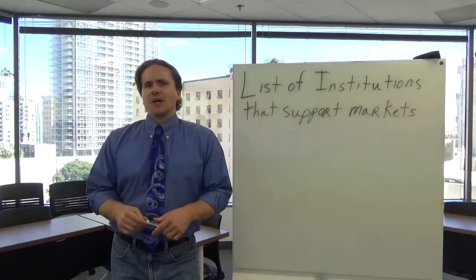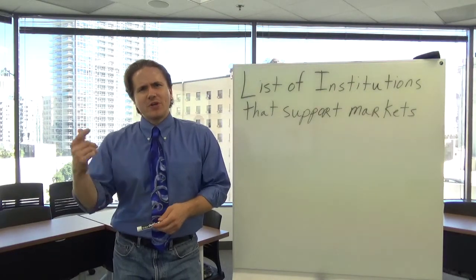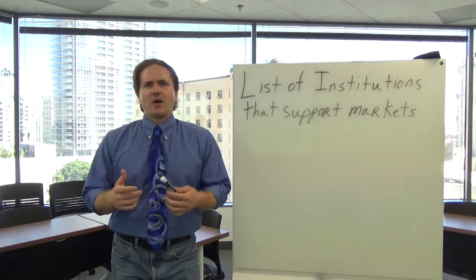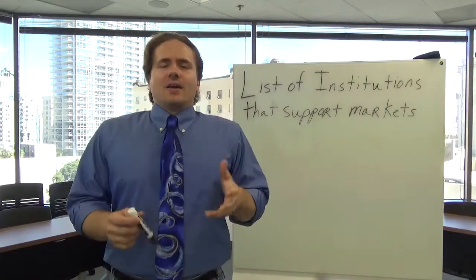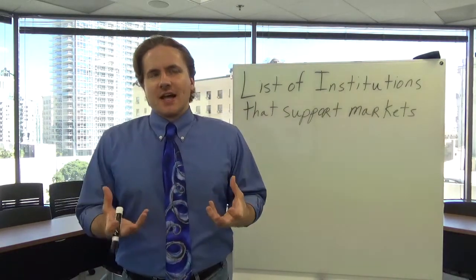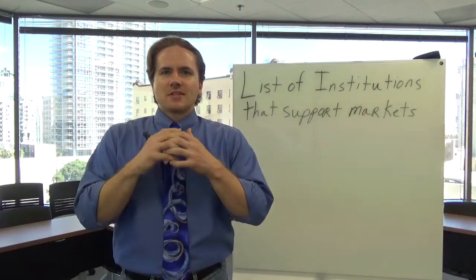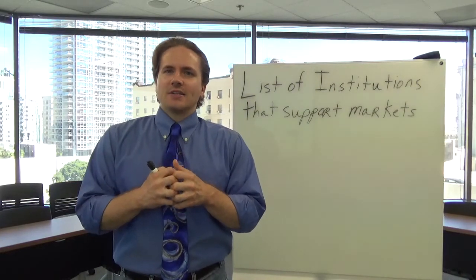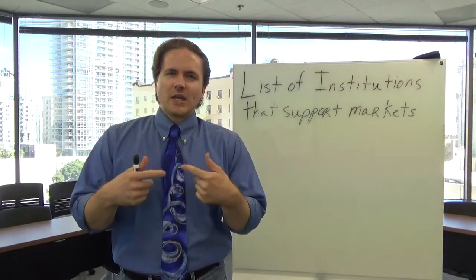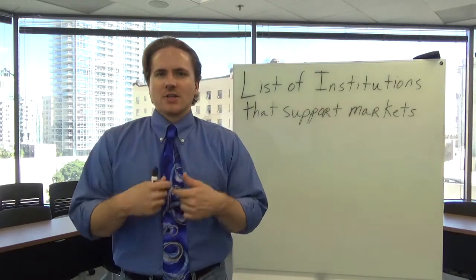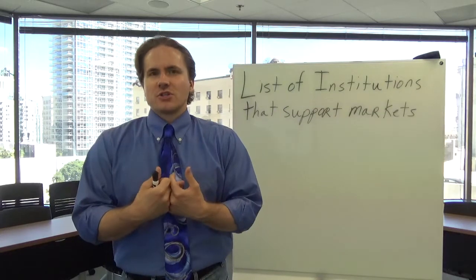In this video we're going to define the various institutions that support markets. But before we do that, let's talk a little bit about how institutions support the markets themselves. Government, society, and business together have this complex interwoven relationship, and this complex interwoven relationship is in itself the market.